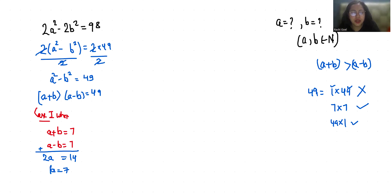So a+b equals 7. If a is 7, then b is 0. So (a,b) equals (7,0).